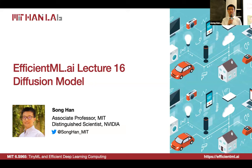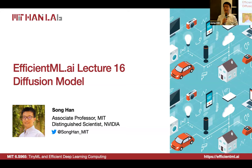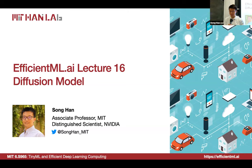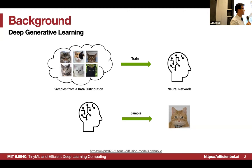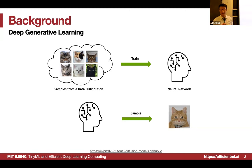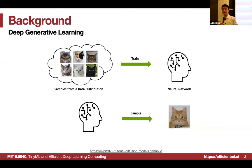Good afternoon. Welcome to EfficientML.ai lecture 16. Today we are going to introduce diffusion models and how to accelerate diffusion models with advanced techniques. In the last lecture, Jay introduced deep generative learning. We first sample from a data distribution to obtain a network, and after training this network, we can use it to predict new images, new contents. That's generative learning.